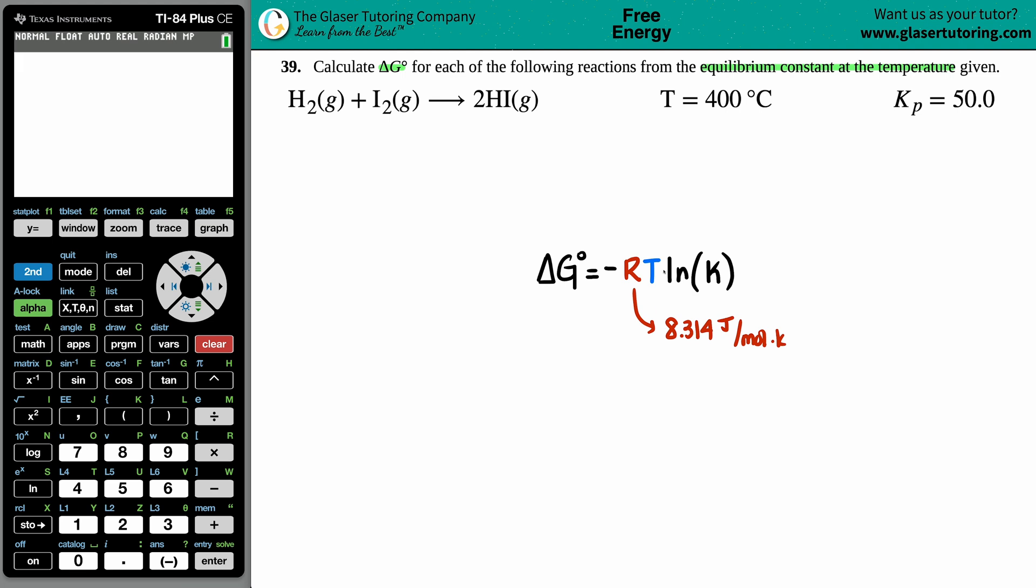If we're using 8.314, just know that it's going to be in joules. Temperature is T. Now look at the R value for the units—there's a Kelvin in here. They gave us Celsius, so I have to convert the Celsius into Kelvin.